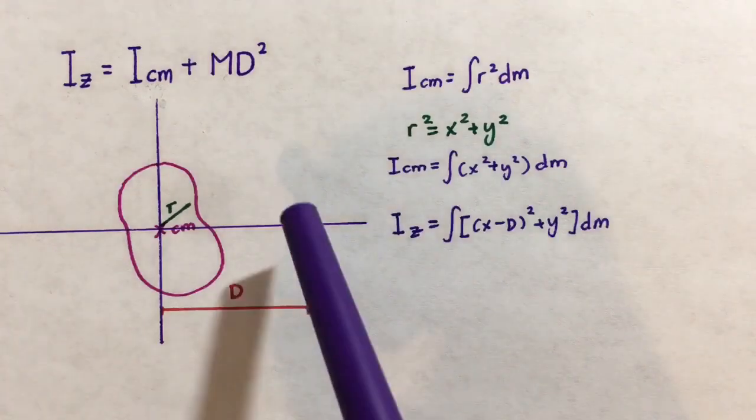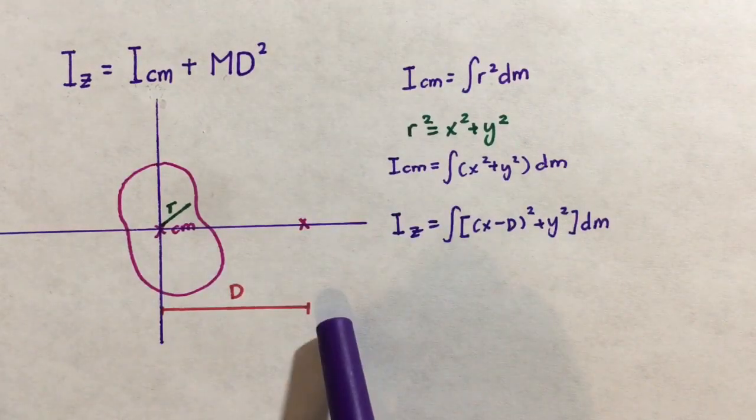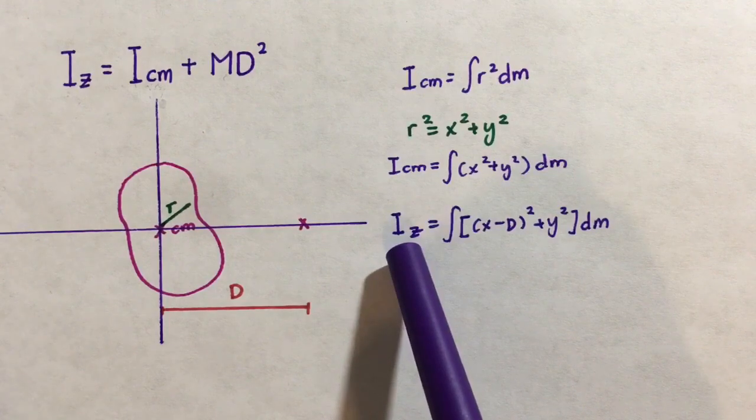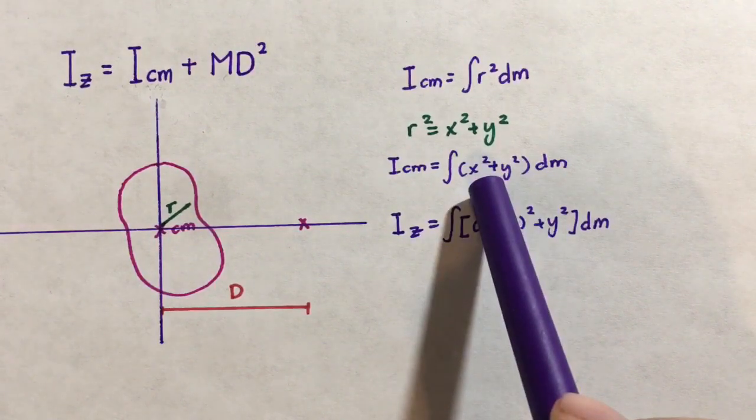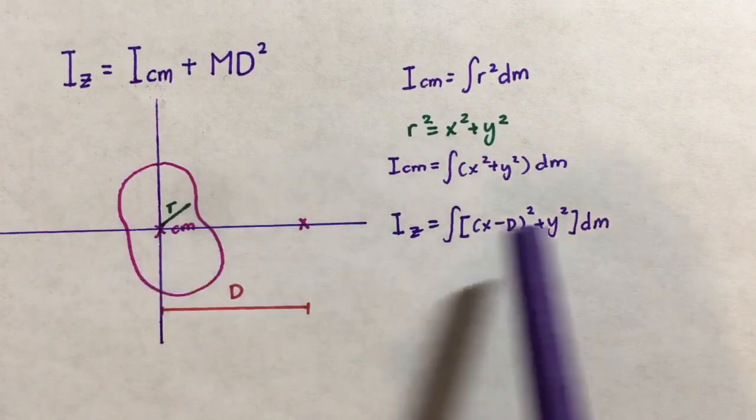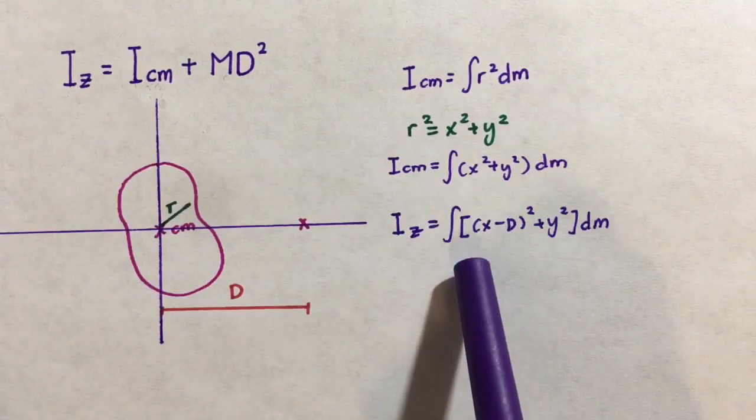Next, because our new axis of rotation is a distance D away from the original center of mass, we can say that the new moment of inertia is just a linear translation away from the original one. Because it is a horizontal translation along the x-axis, we only need worry about the x-coordinate translation.